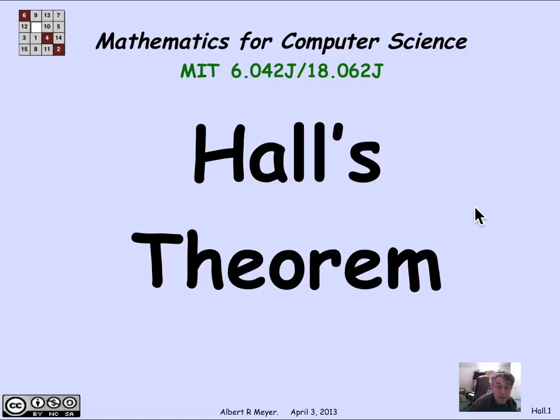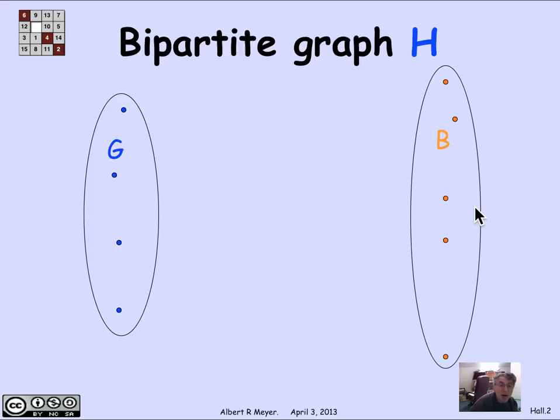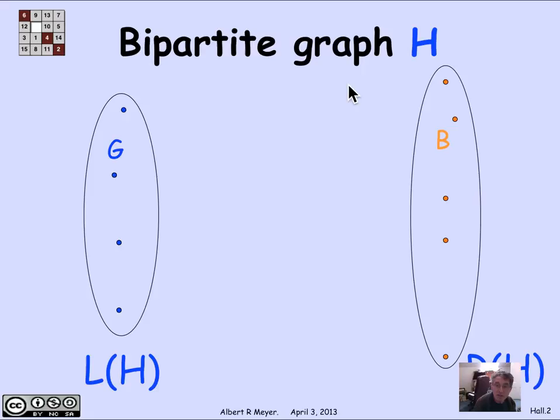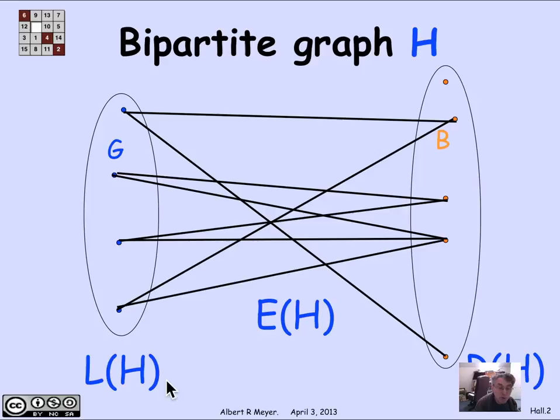Let's state Hall's theorem in a way that doesn't mention boys and girls, but let's remember the girl-boy setup to start. The general setup is a bipartite graph H. A bipartite graph has two sets of vertices: the left vertices L(H) and the right vertices R(H). The vertices of H altogether are L(H) union R(H). Both are non-empty and don't overlap. The edges of H only go between L(H) and R(H). That is the definition of a bipartite graph.